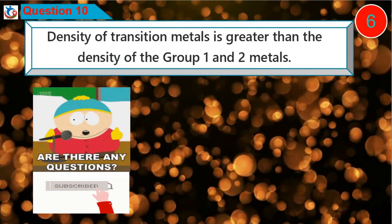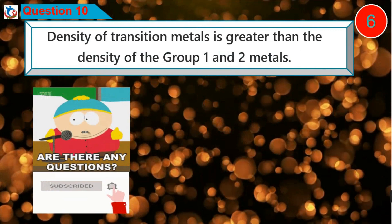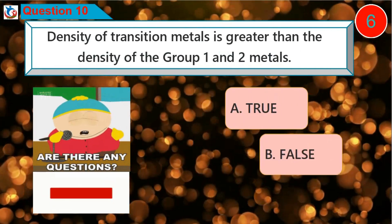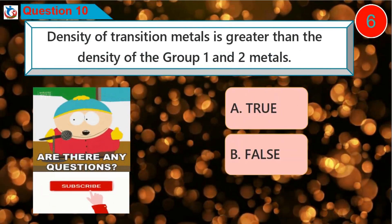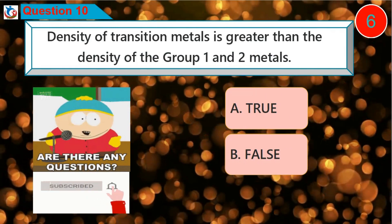Question 10: The density of transition metals is greater than the density of group 1 and group 2 metals. True or false?